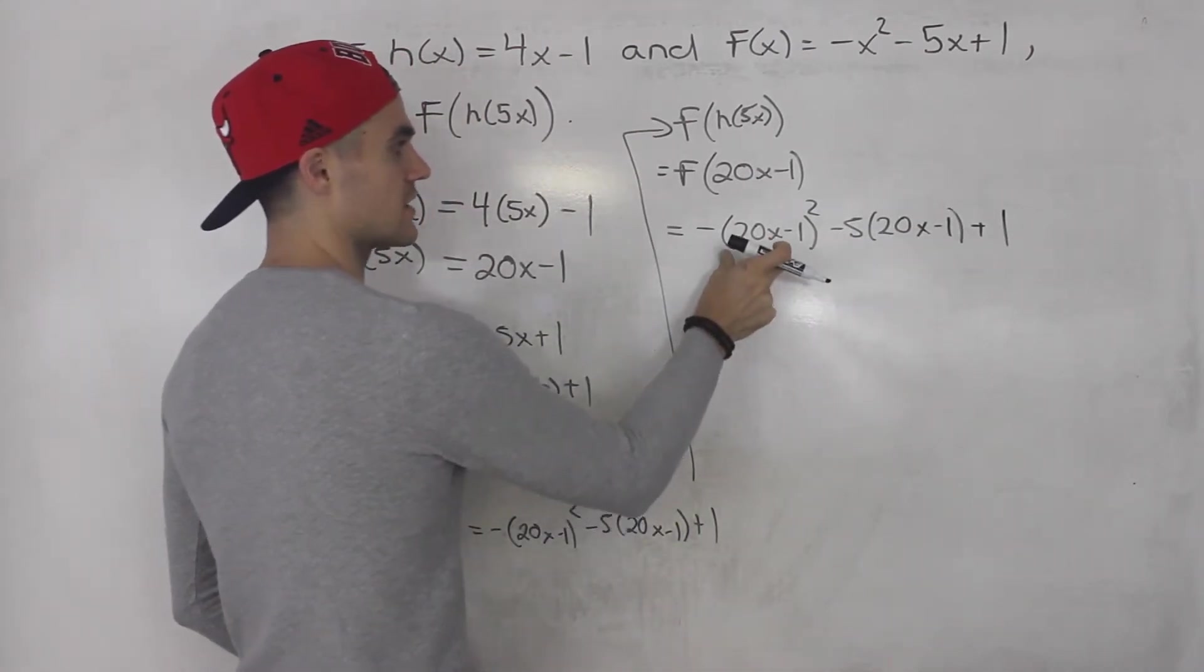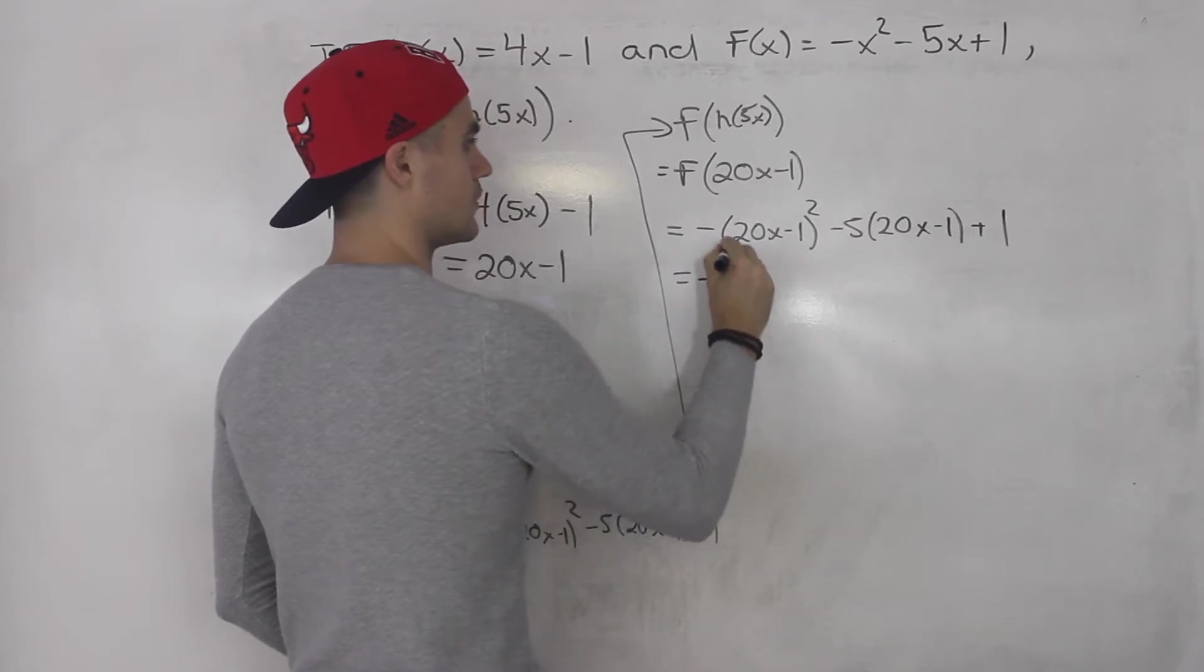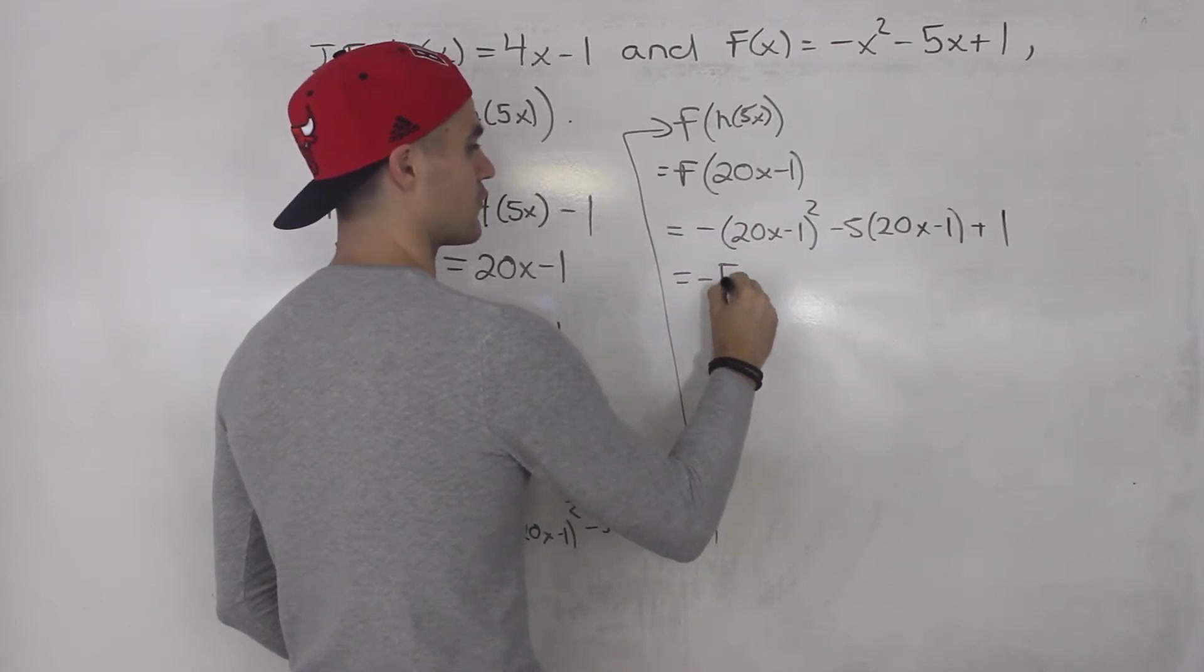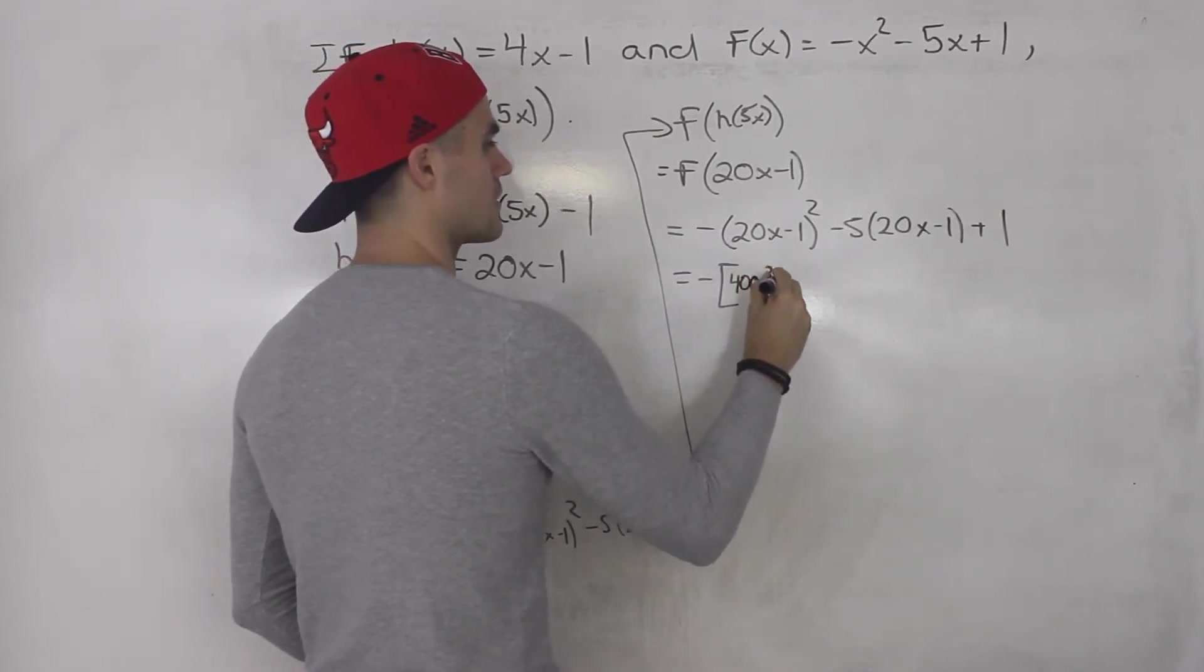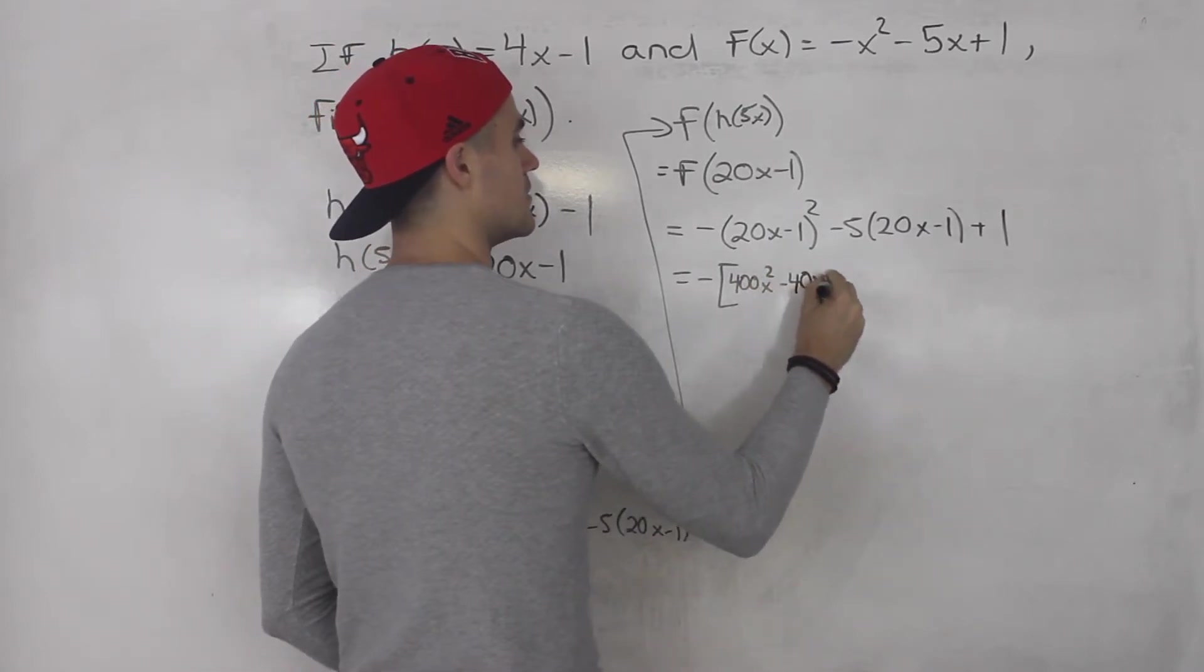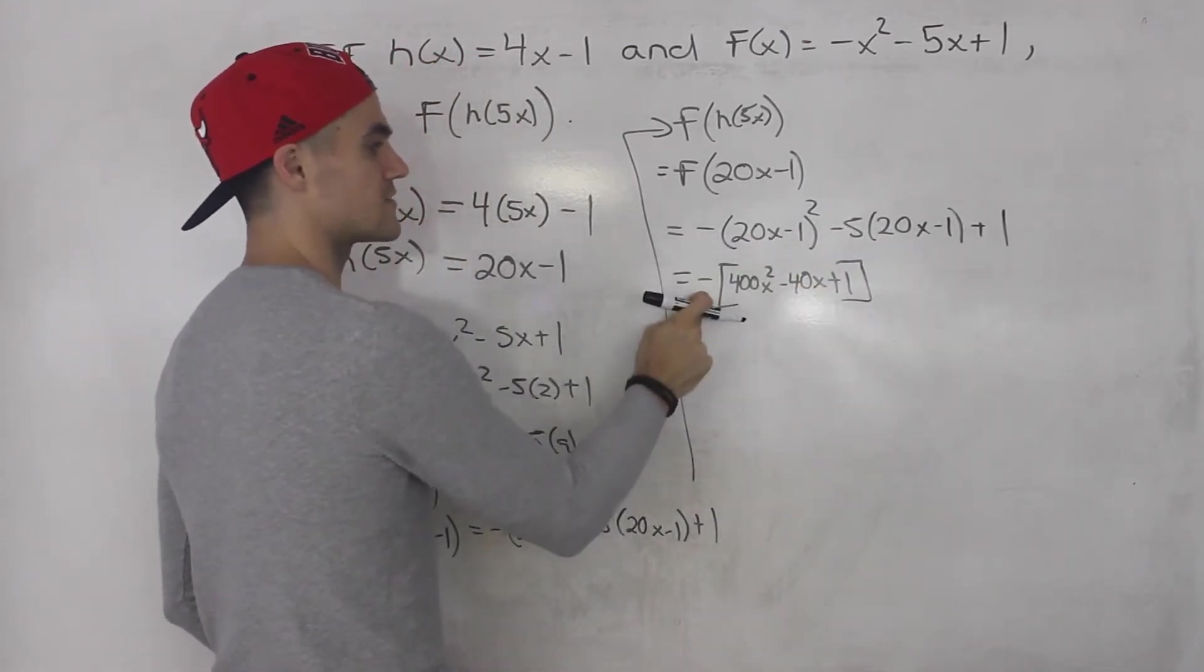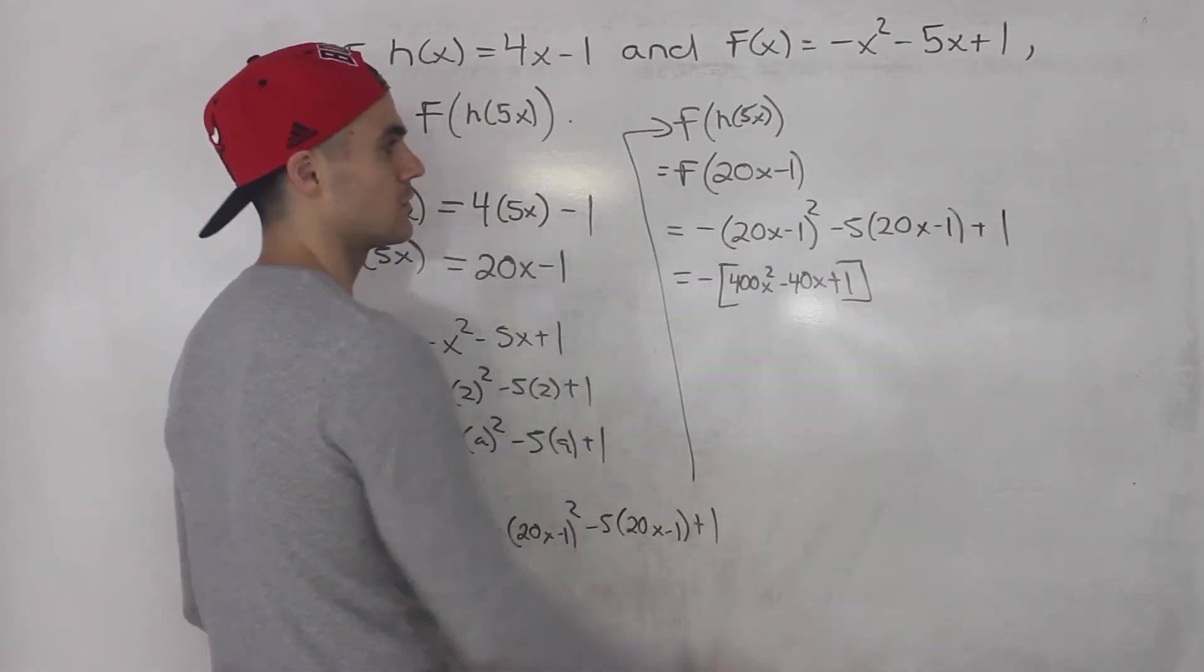So here you would foil this out. So you'd have two brackets multiplying by each other, and the negative is in front. And you multiply those two brackets, you would end up with 400x² - 40x + 1. That's if you foil these two out. And then that negative is still in front. So we're going to have to distribute it in the bracket.